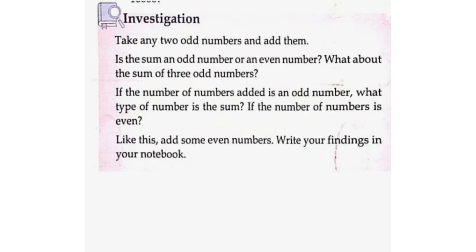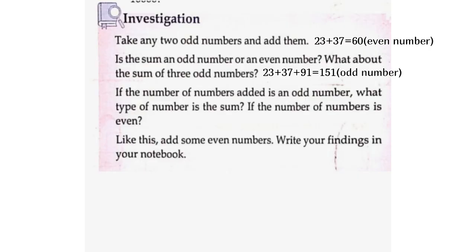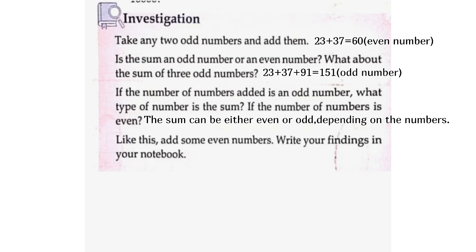Investigation: Take any two odd numbers and add them. 23 plus 37 equals 60 — an even number. What about three odd numbers? 23 plus 37 plus 91 equals 151 — an odd number. If the count of numbers added is odd, the sum is odd. If the count is even, the sum is even. Now add some even numbers and write your findings.